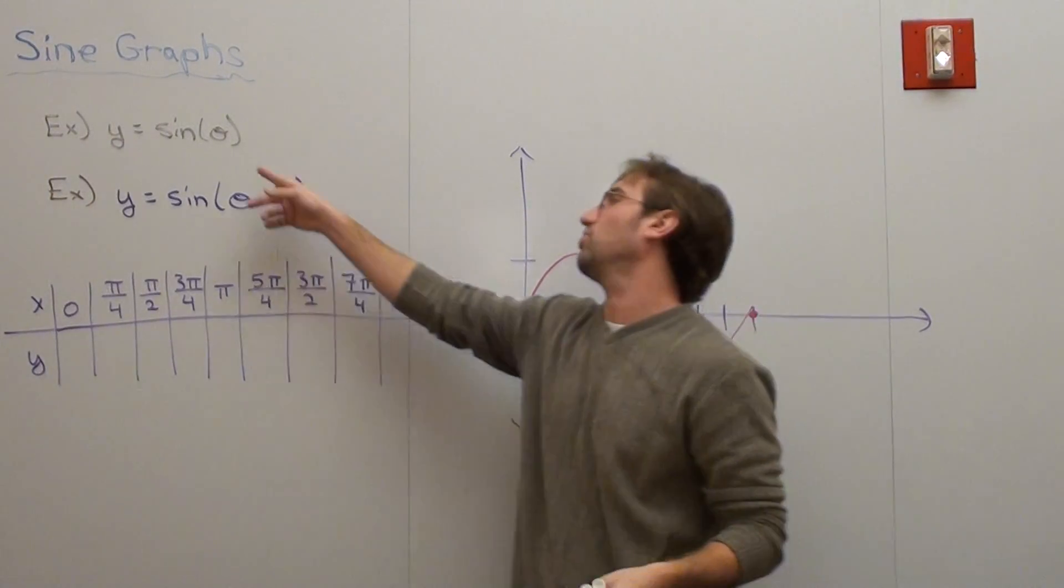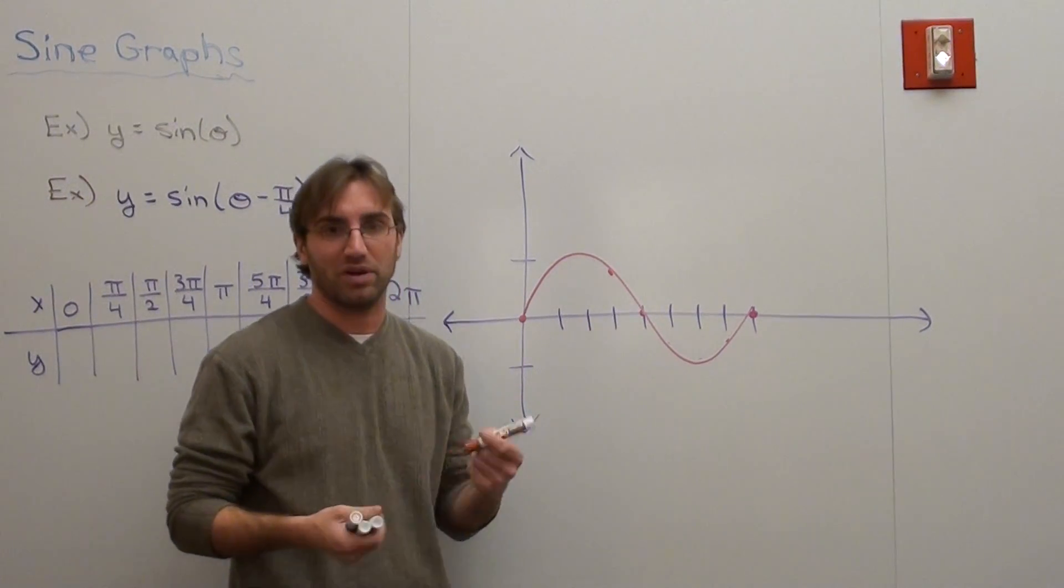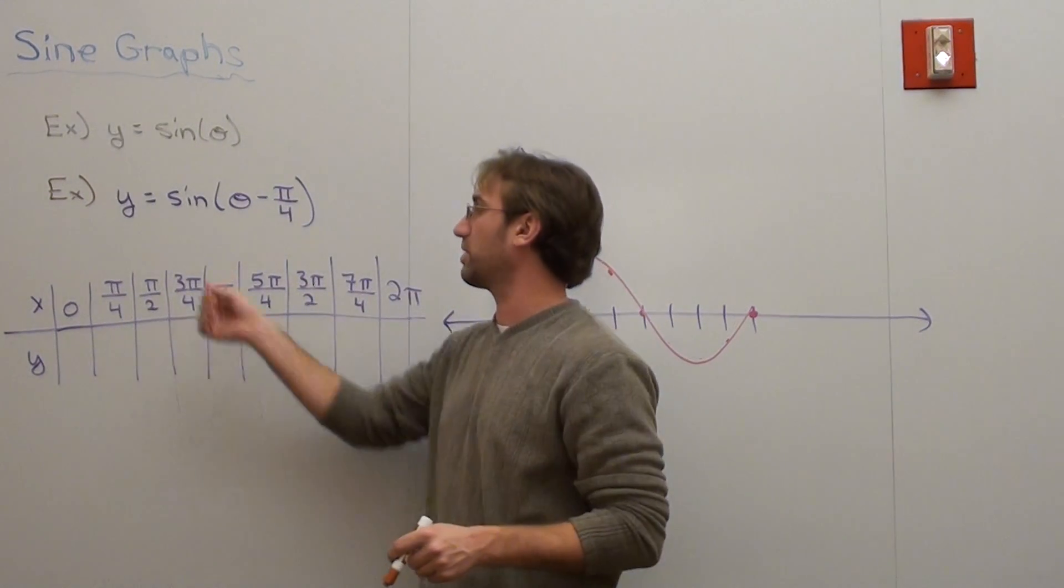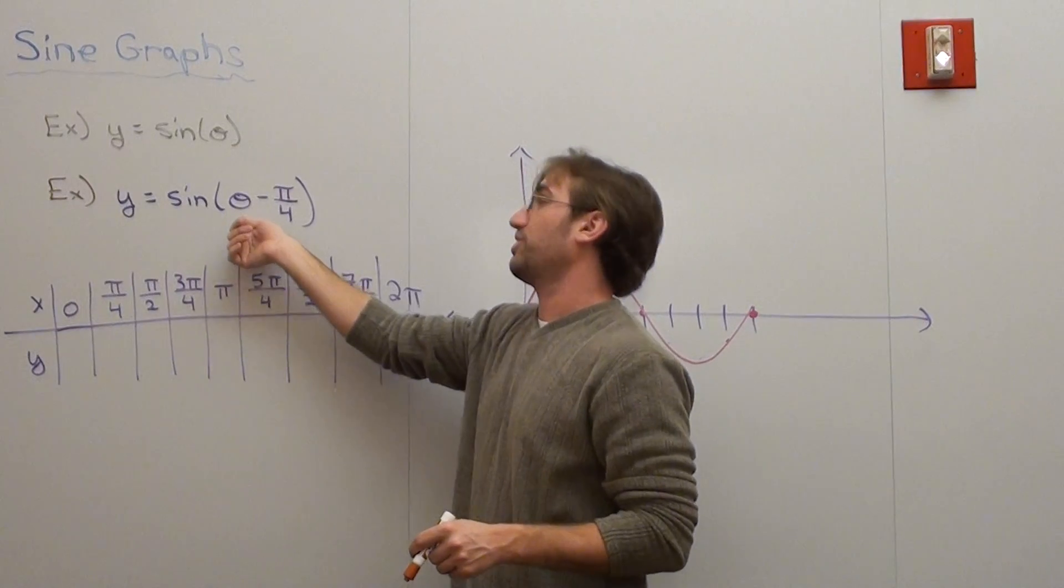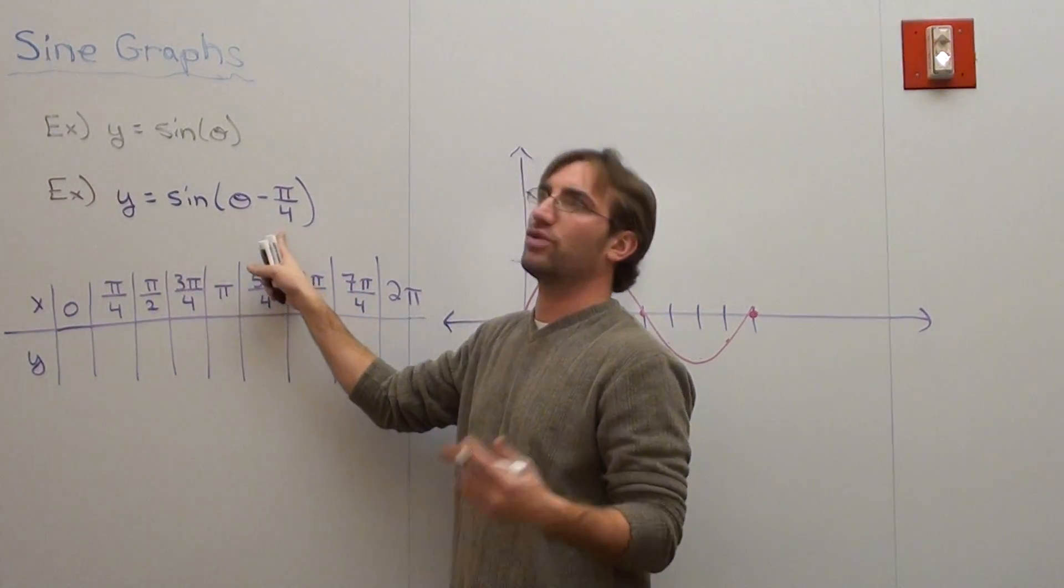I went ahead and I drew y equals the sine of theta again, this red graph, as best as I could, but it's not going to be perfect. Now what I'm going to do is figure out what the sine of theta minus pi over 4 is.